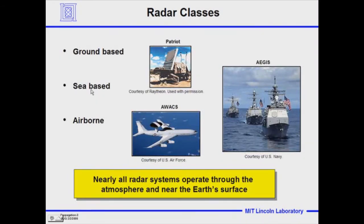Many different classes of radar have been built: radars that operate from the ground, sea-based radars, airborne radars, and all of them propagate their radar beams through the Earth's atmosphere or near the Earth's atmosphere, some propagating down low, some propagating upward to very sparse areas. This medium, as shown on the last viewgraph, we call it the soup.